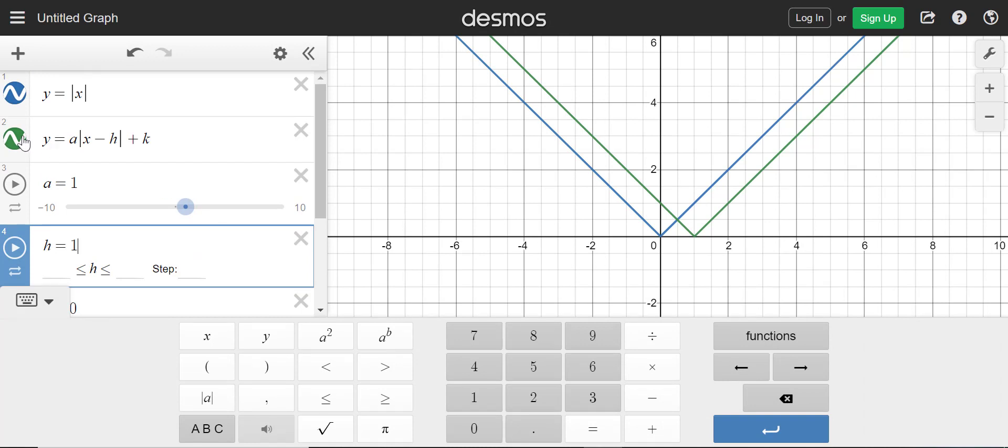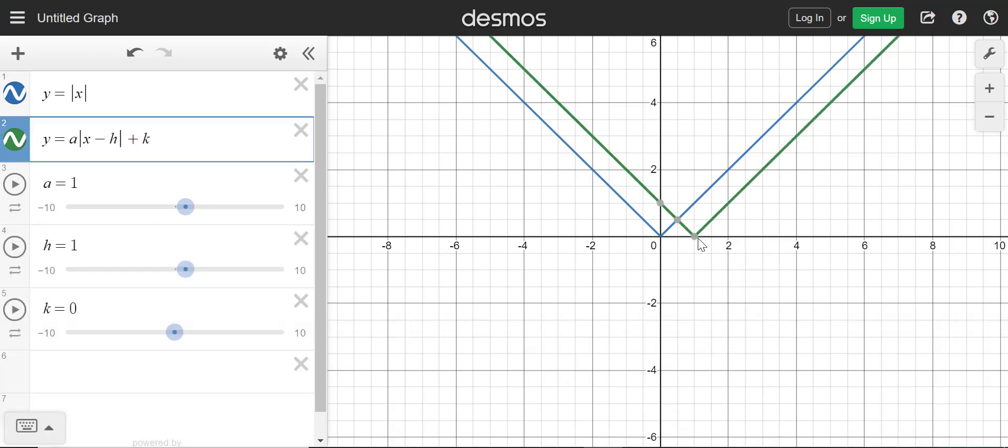Alright, so right now in the green one, I have basically the absolute value of x minus 1. So you can see that if you have minus 1 inside the absolute value, it's going to move it to the right one space. And as I slide h, there is absolute value of x minus 2. It's moved 2 to the right. And the absolute value of x minus 3 has moved 3 to the right.